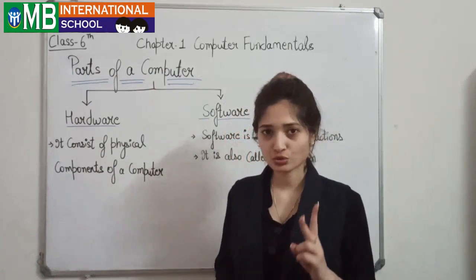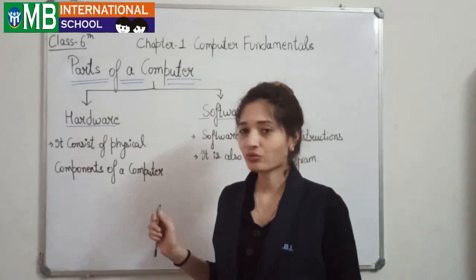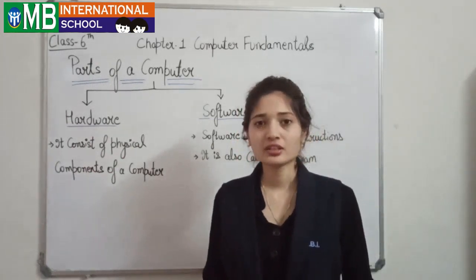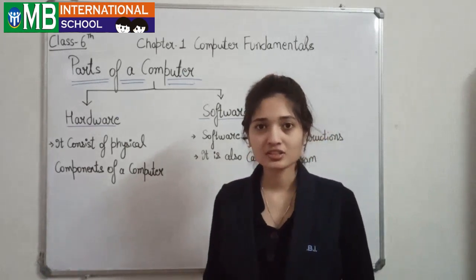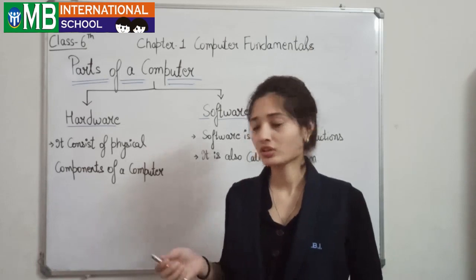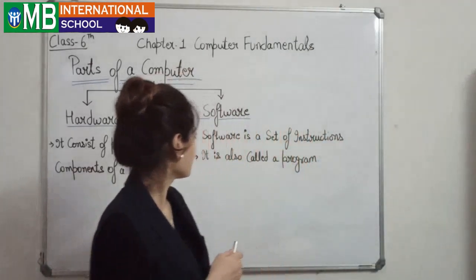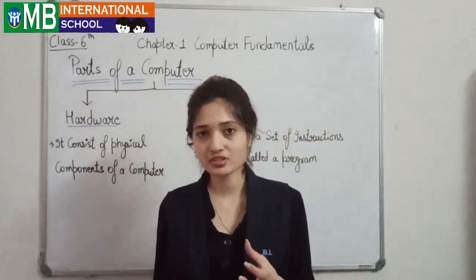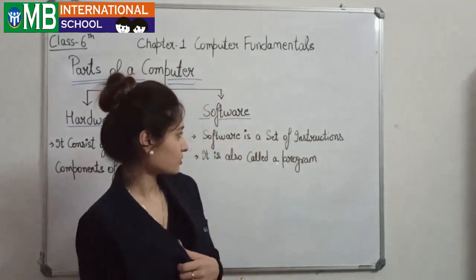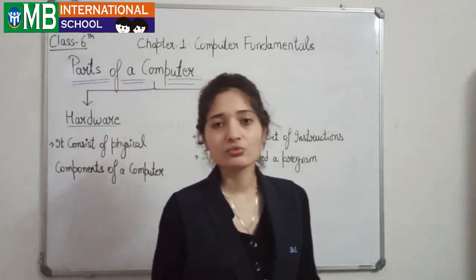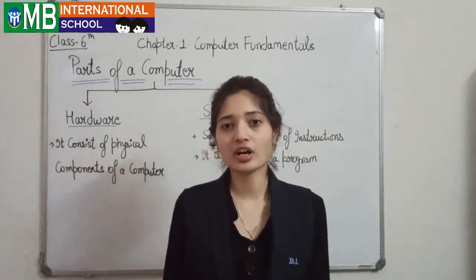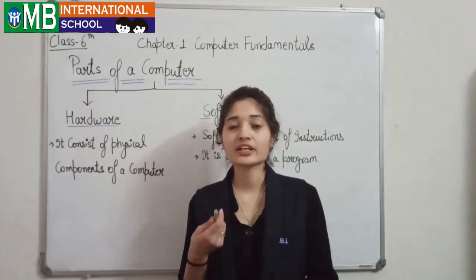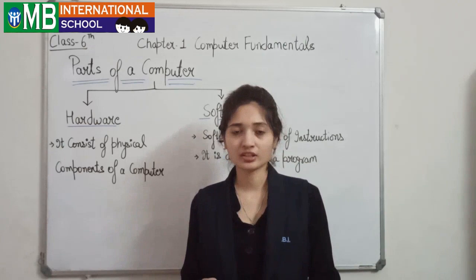Parts of a computer. A computer has two main parts: hardware and software. Hardware consists of the physical components of a computer — components that we can touch and feel, like monitor, keyboard, CPU, and mouse. These are examples of hardware. Software is a set of instructions, also called a program. Whatever instructions or programs we write in the computer are called software. Examples are applications like Word, Excel, MS Word, and Notepad — these are the software that we use.